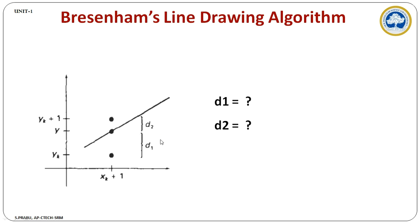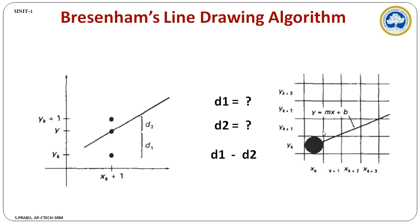We need to find the values of d1 and d2, then find d1 minus d2. If the value is positive, the next pixel increments both x and y coordinates. When the value is negative, we increment only the x coordinate value. In this way, the decision can be taken in Bresenham's line drawing algorithm. This d1 minus d2 is treated as the decision parameter, represented as pk. This is the core idea behind Bresenham's line drawing algorithm.